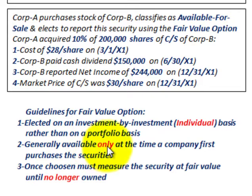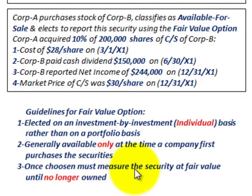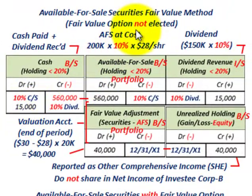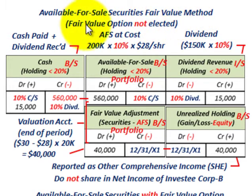Second, the fair value option is generally available only at the time a company first purchases the securities — you have to make that election at initial purchase. And once chosen, you must measure the security at its fair value until it's no longer owned or is sold. Now let's look at the regular available-for-sale securities fair value method, where the fair value option is not elected.